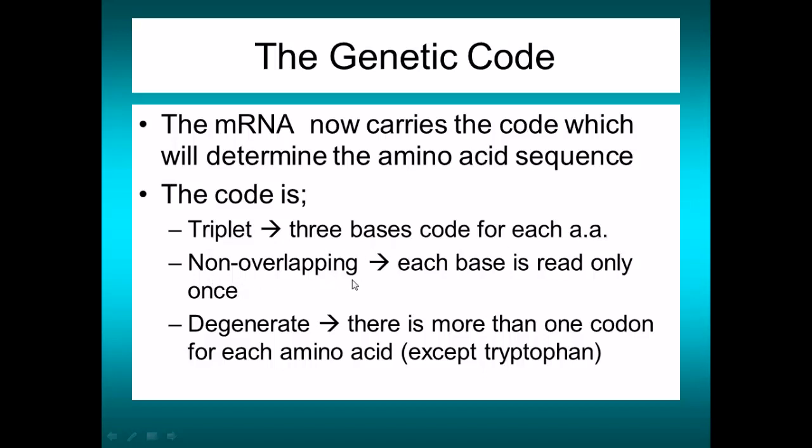The code is also non-overlapping: you read three bases, then move on to the next three bases, and the next three. Each base is only read once. It is also a degenerate code — not an insult — meaning there is more than one codon for each amino acid, with the exception of tryptophan.